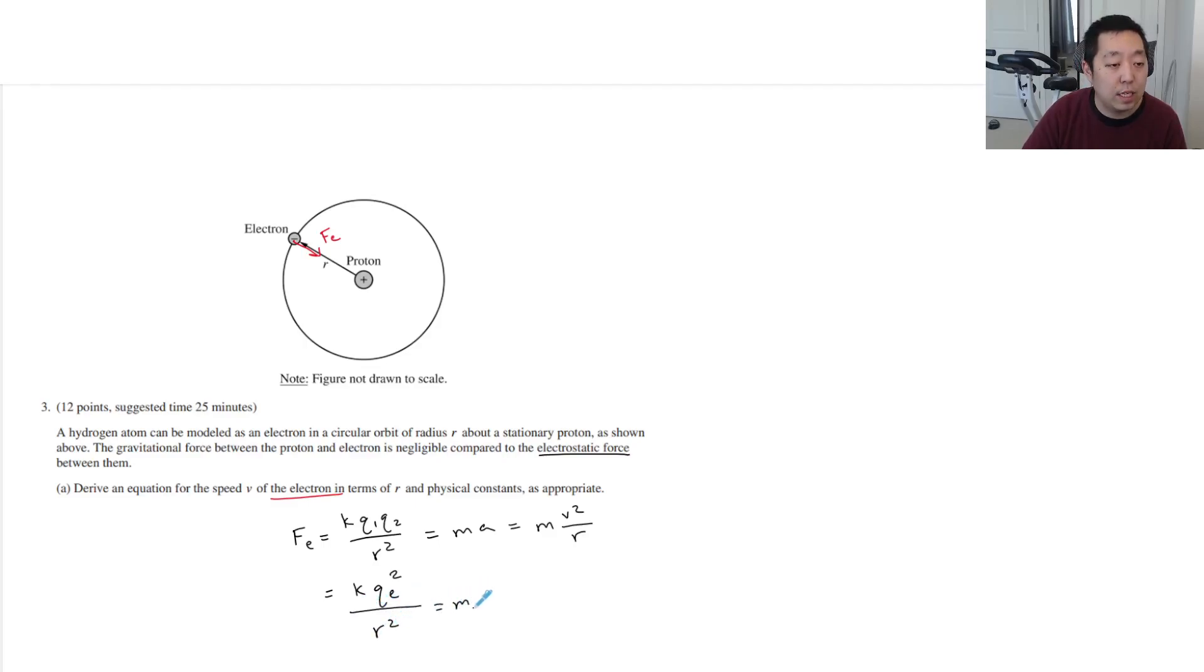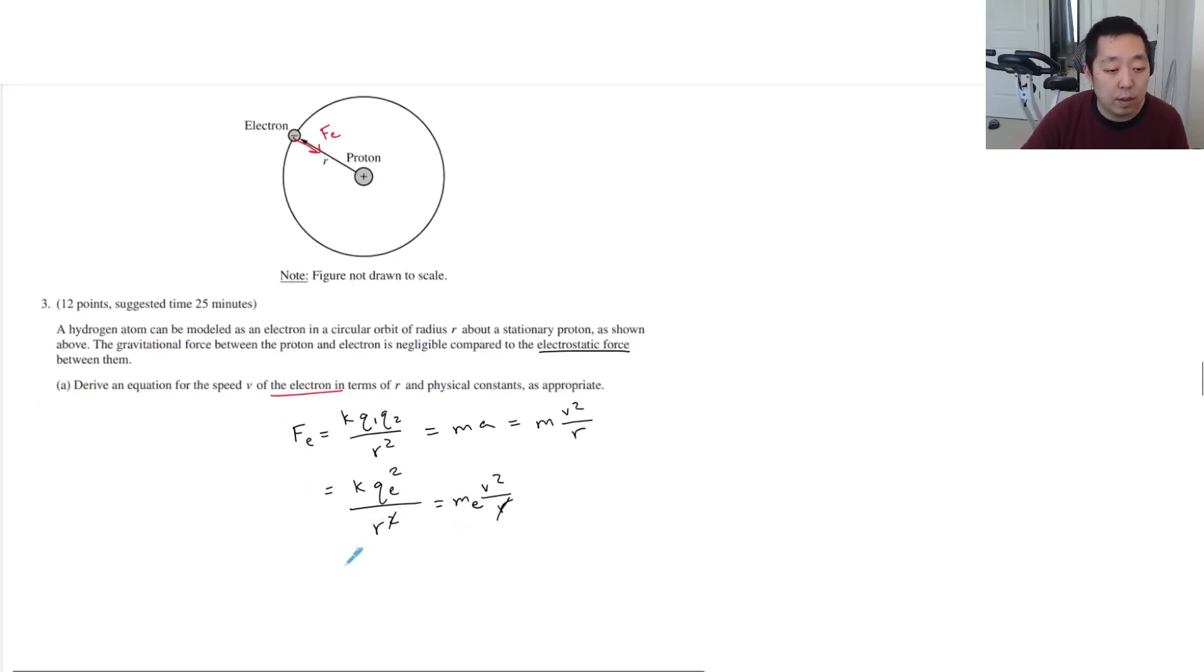v squared over r. One of these r's is going to cancel, and then I can bring the me over, so I have k qe squared over me times r is equal to v squared, and then I just take the square root.